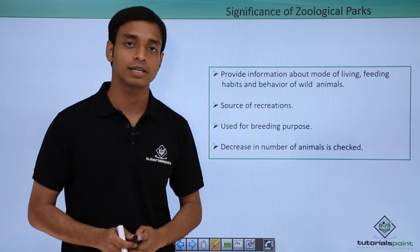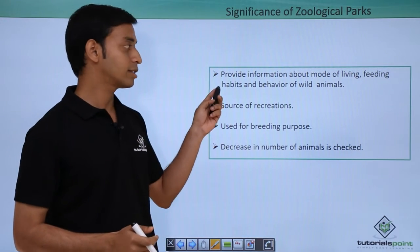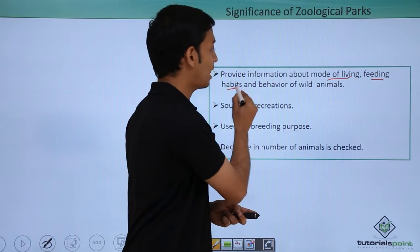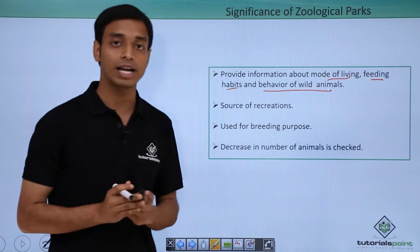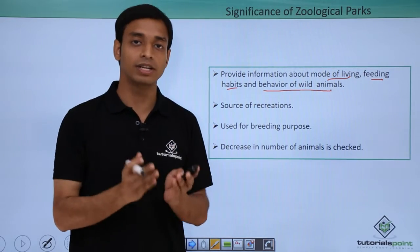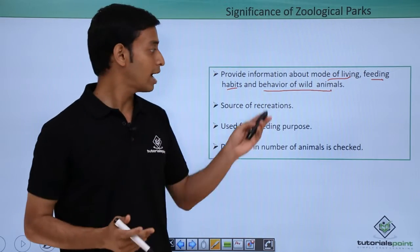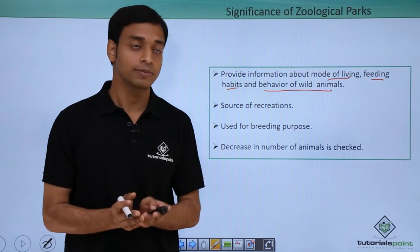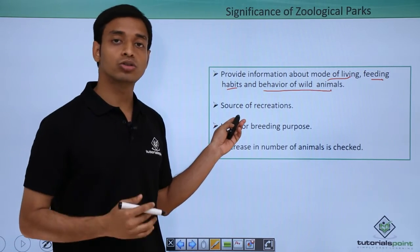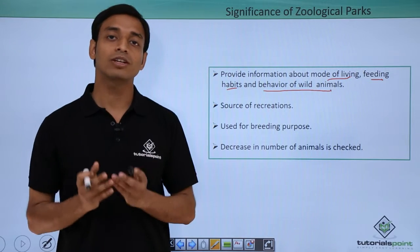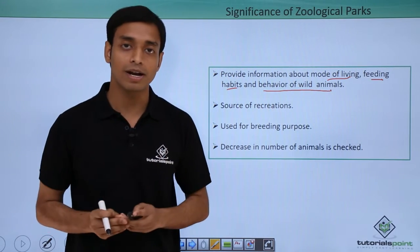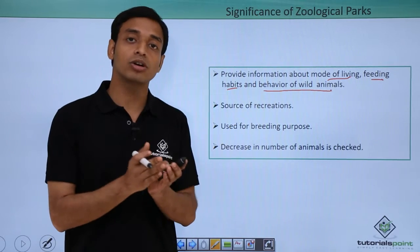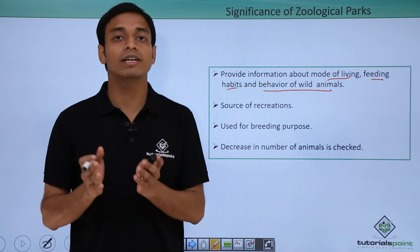First of all, zoological parks provide information about the mode of living, feeding habits, and behavior of wild animals — how these animals feed and how they behave with their fellow animals. They are also a good source of recreation; we can visit zoos and zoological parks, and it is especially a mode of recreation for children, who get very excited to see these animals.